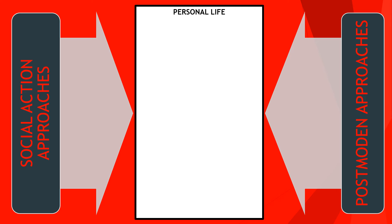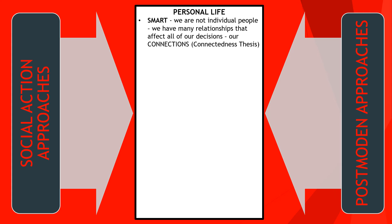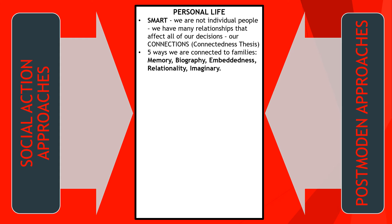Personal life is somewhat separate — it's not quite social action theory and not quite postmodernism, but somewhere in between. For personal life, we first have Smart, who says that we are not isolated individuals with many relationships, as postmodernists suggest, but that we are connected to others around us. This is called the connectedness thesis. The five ways we're connected are through memory, biography, embeddedness, relationality, and imagining. Memory relates to family memories; biography involves documents and photos recording our role in the family; embeddedness is the connection to family roots, heritage, and family name; relationality is the relationships we have; and imagining is the contrast between the family we think we have and what we really have.